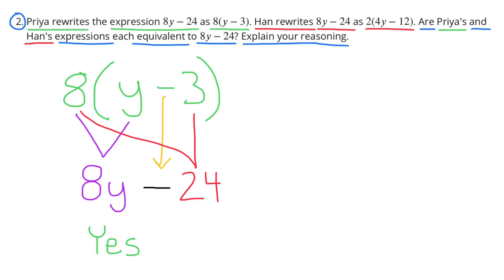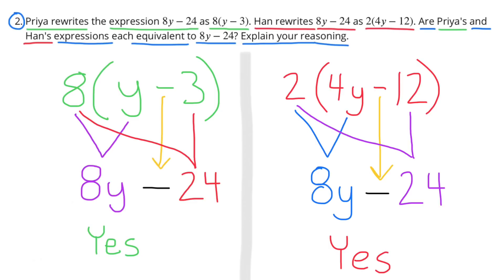Now let's compare the expression Hahn wrote: 2 times (4y minus 12). 2 times 4y equals 8y, bring down the subtraction sign, and 2 times 12 equals 24. So 8y minus 24 is equivalent to 2 times (4y minus 12). Yes, I also agree with Hahn's expression. They were both correct.